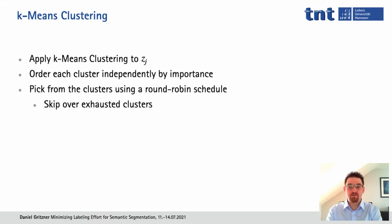We also added a variant where we used k-means clustering first. As I said, the first zj is picked to capture a representative example. However, we have different types of objects — for example, cars, buildings, and trees. So we applied k-means clustering first and then picked the most representative example of each cluster to represent each type of object well. After the principal component analysis, we applied k-means clustering, then ordered each cluster independently just as before. We then picked example zj's in a round-robin schedule from the clusters, skipping over-exhausted clusters, giving us a long list of zj's to identify which images xi to use.